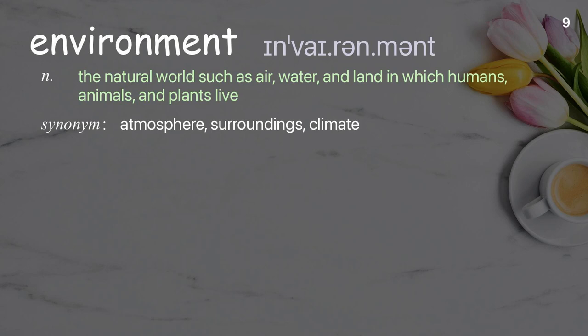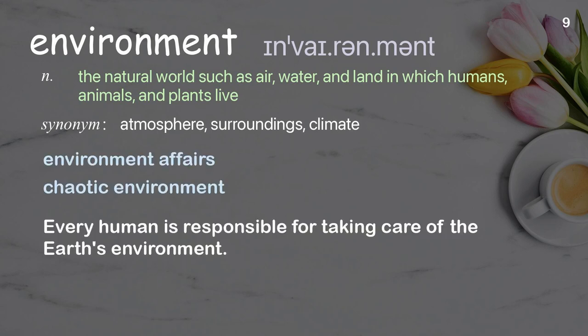Environment: the natural world such as air, water, and land in which humans, animals, and plants live. Examples: environment affairs, chaotic environment. Every human is responsible for taking care of the earth's environment.